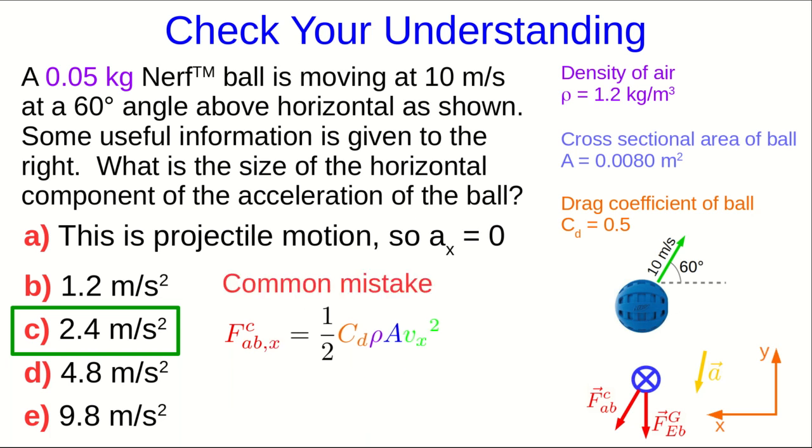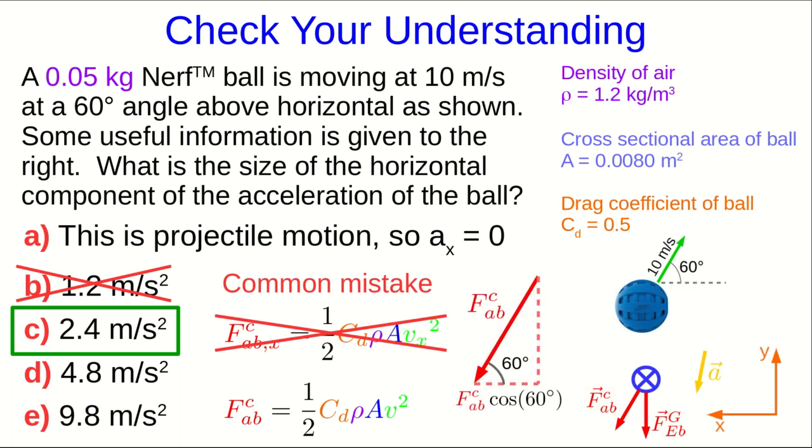A common mistake that students make is to think that they can use the x component of velocity in place of the speed in the drag equation to get the x component of the drag, but that is incorrect. In this case, it would give you b, which is incorrect. The equation gives you the magnitude of the drag force, and then if you want its components, you have to break it up into components using trigonometry in the normal way.